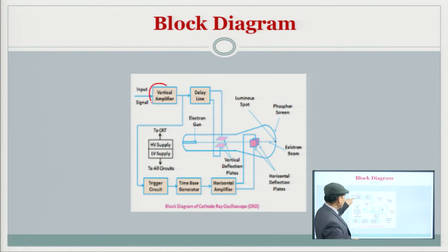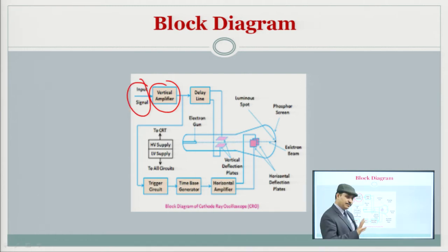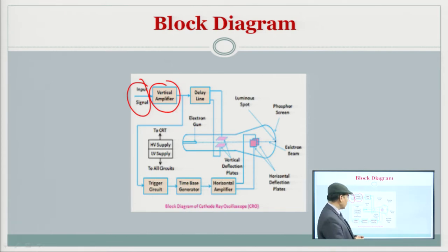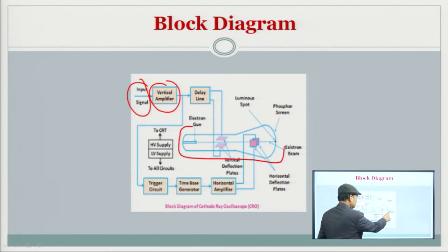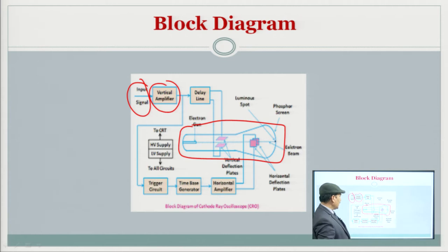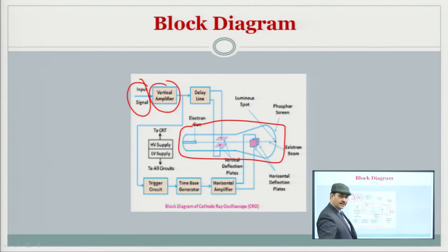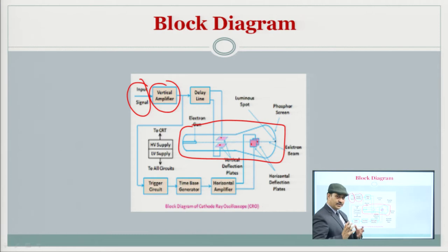You can see that there is a vertical amplifier here, and that is an input signal, which is the main thing for identification. That is basically in the form of a tube — an electron gun tube. These are the key components of the basic circuit of the CRO.